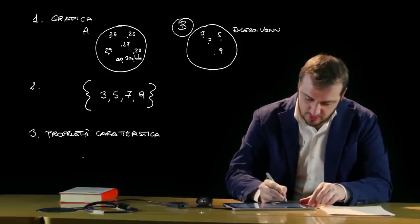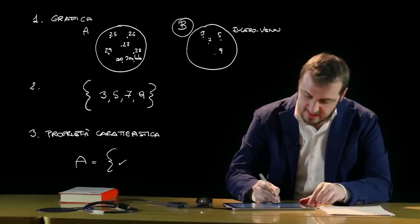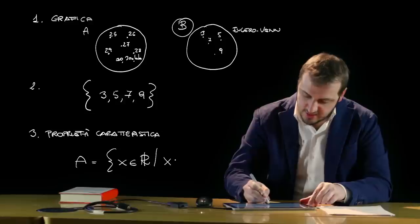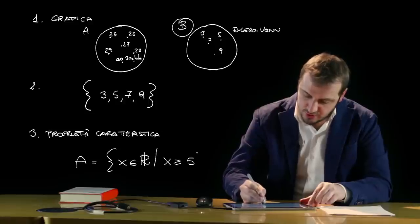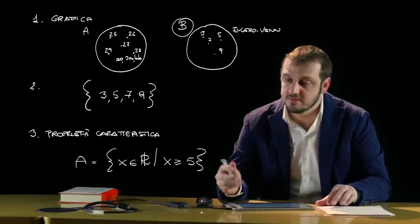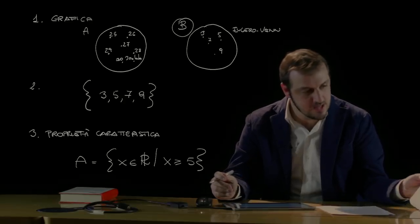Per esempio, l'insieme A è l'insieme dei valori di x, elementi x appartenenti ai numeri reali, tali che x sia maggiore o uguale a 5. In questo modo si descrive l'insieme tramite la sua proprietà caratteristica.